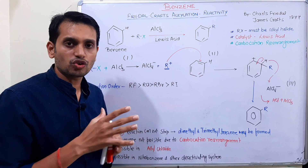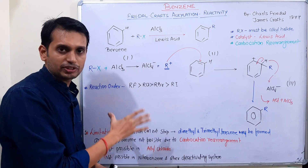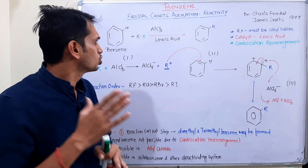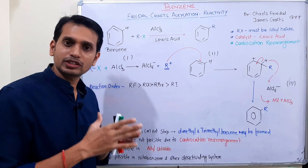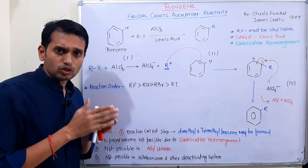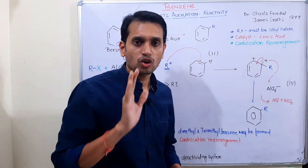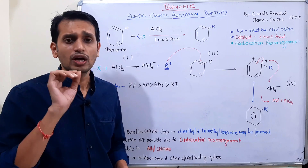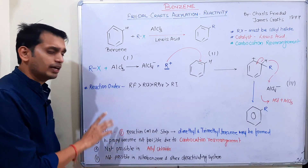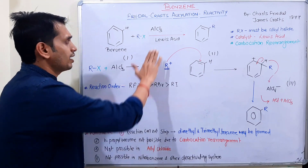اس video میں کچھ specific اور important points ہیں — جن میں reaction order، drawbacks اور limitations بھی شامل ہیں۔ Reaction کی بات کریں: benzene میں جو reactant ہوگا وہ alkyl halide ہوگا — یعنی RX۔ Alkyl halide ضروری ہے — چاہے ethyl، propyl یا butyl ہو — لیکن allyl یا benzyl halide use نہیں کر سکتے، یہ ایک limitation ہے۔